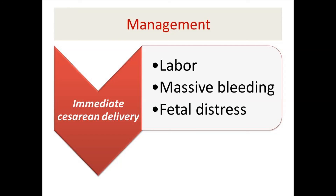Indications for immediate caesarean section in antepartum hemorrhage include: the patient entering labor, massive bleeding of more than one liter or less than one liter with the patient in shock, and any features of fetal distress. In these conditions, immediate caesarean delivery is required regardless of gestational age. The mode of delivery in placenta previa is almost always by caesarean section. Next video will cover placental abruption.